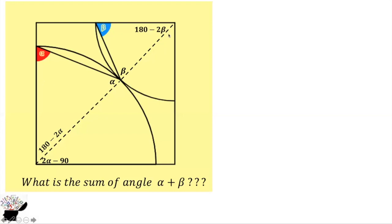Automatically this angle will also be 2 beta minus 90, because the sum of the angles should be 90 — the same as before. Now let us consider this right angle triangle. We know that this angle is also 90 degrees.